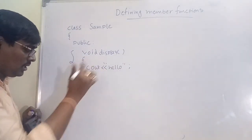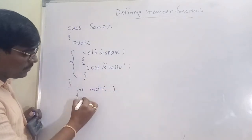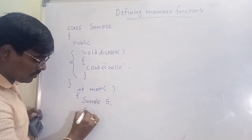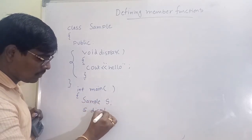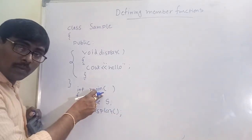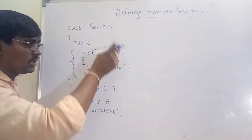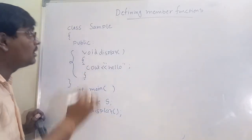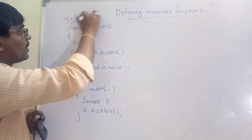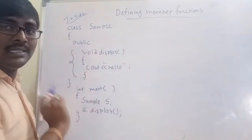Simply call from int main. Create an object for the Sample class: Sample s. Then call s.display(). What happens? From main, an object is created, and using that object we call the function display. 'Hello' is printed on the screen. This is called defining the member function inside the class.